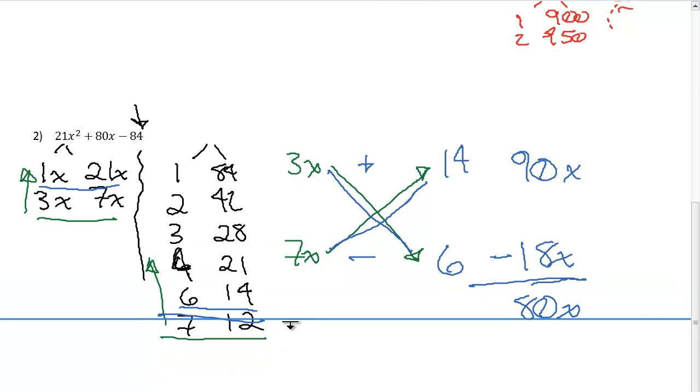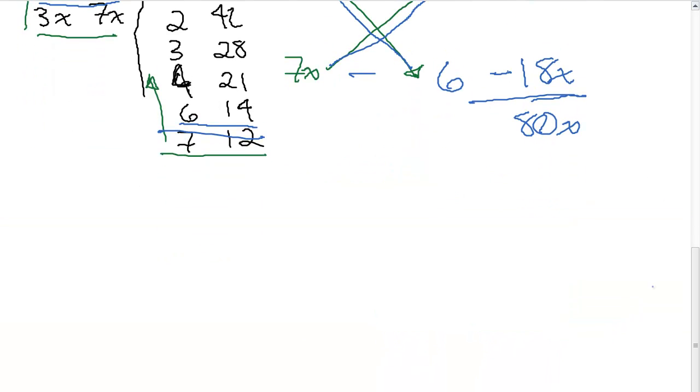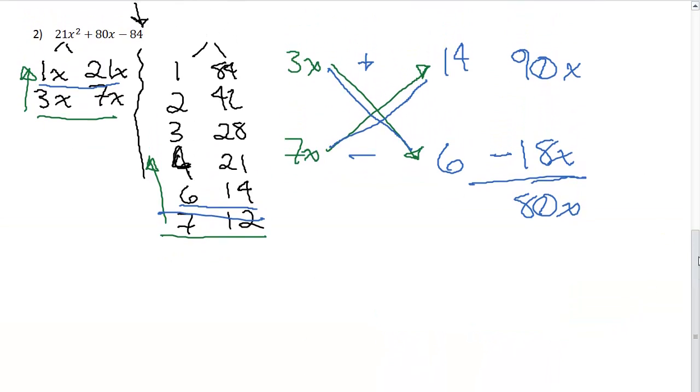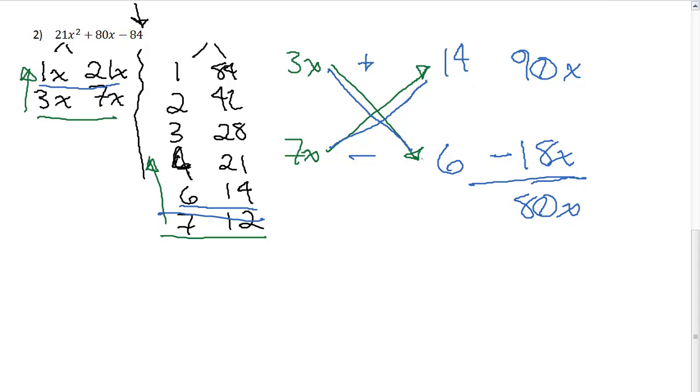And so I'm going to insert some space down here at the bottom. Okay. Sorry. I'm just trying to center stuff in the video. All right. So here we go. So here's my first one, right? So it's going to be 3x plus 14. Here's the second factor. There's your 7x minus 6. And, of course, I do want to check. So I'm going to use my distributive property.